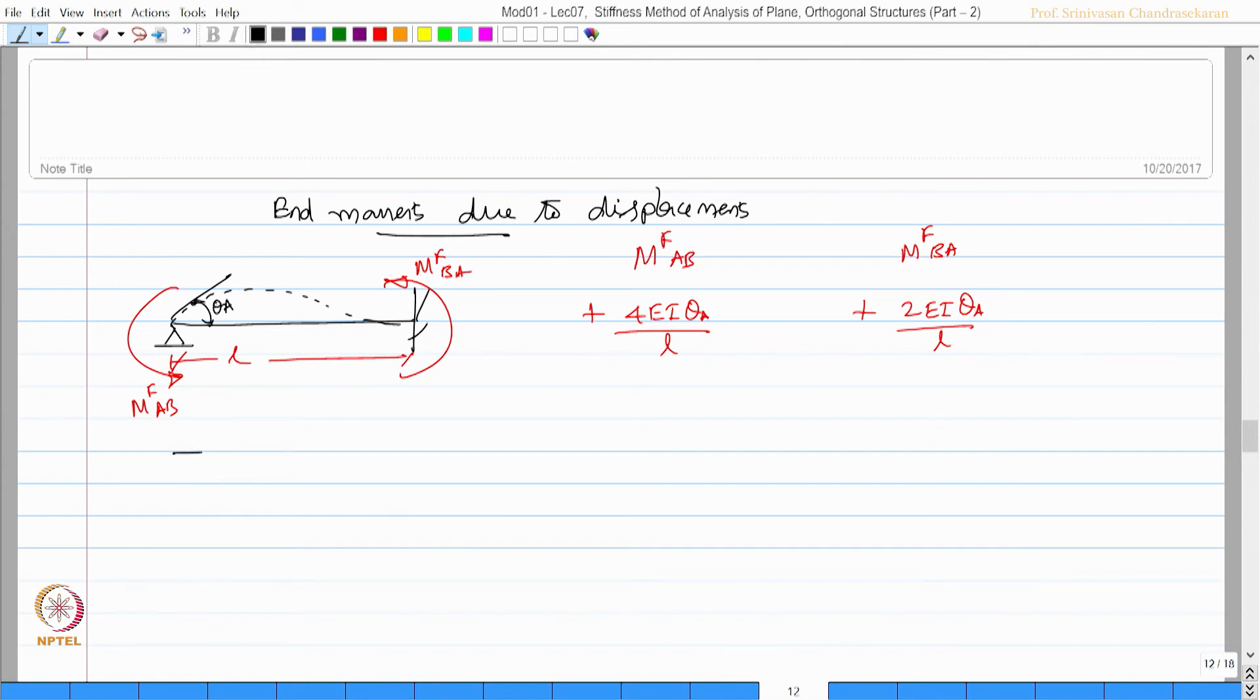Suppose we have a beam fixed at the left and roller. I want to give displacement by rotation at the end. This is going to be θ_B. Then this will be M_BA, this will be M_AB, and M_BA will be plus 4EI·θ_B/L, this is plus 2EI·θ_B/L.